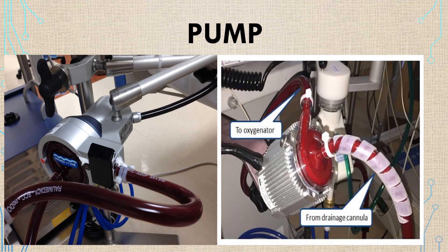The second most important component of the ECMO circuit is the pump. The pump has two connections: one from the drainage cannula into the pump, and the other out from the pump to the oxygenator.